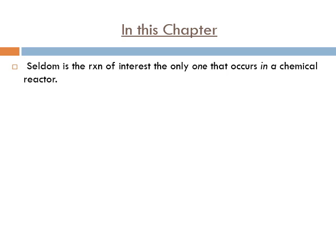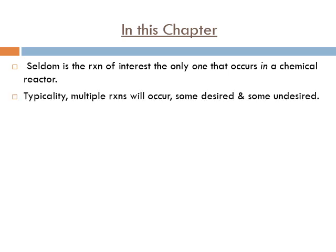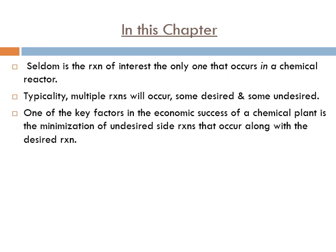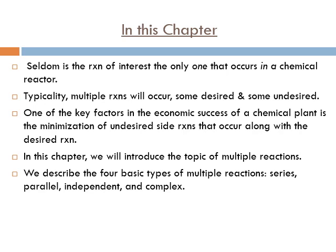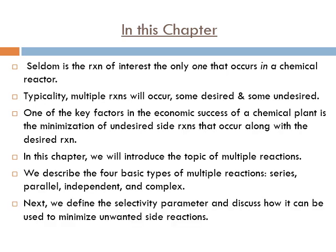Seldom is the reaction of interest the only one that occurs in a chemical reactor. You design a reactor hoping that your desired reaction takes place; however, this is not really the case in reality. Other side reactions, probably undesired reactions, take place. Typically, multiple reactions will occur — some desired and some undesired. One of the key factors in the economic success of a chemical plant is the minimization of undesired side reactions.